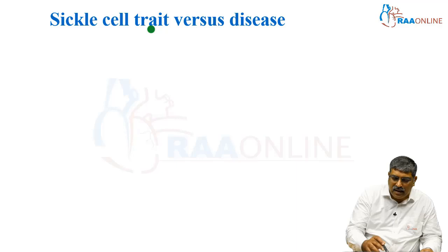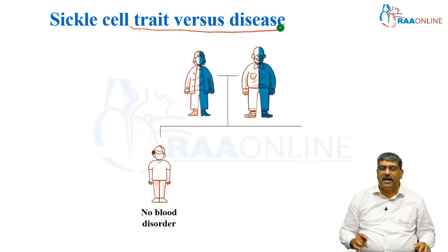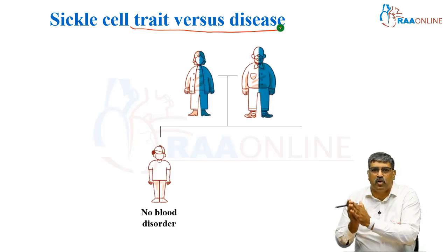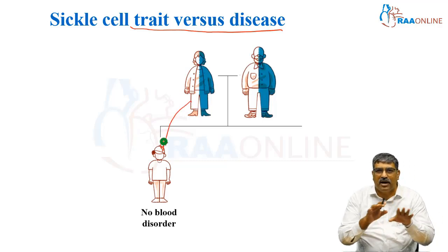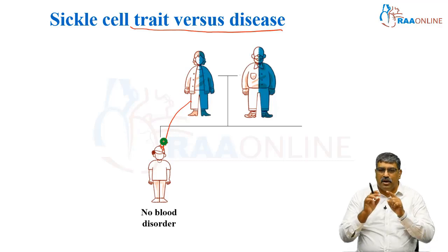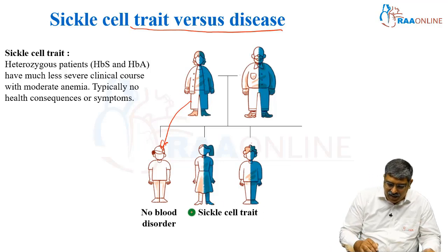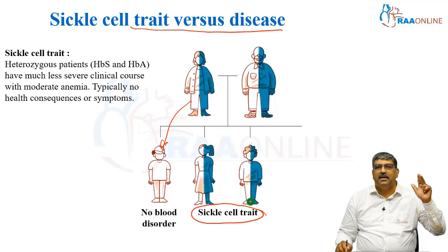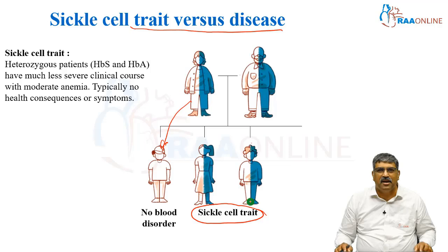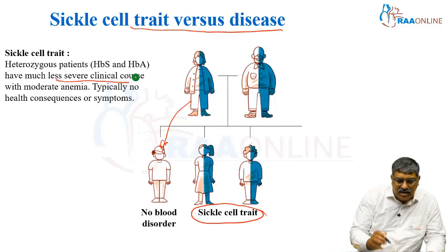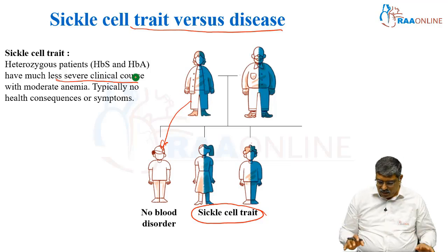Coming to the difference between trait and disease — what is sickle cell trait and what is disease? If you have a parent who is a carrier of hemoglobin S, when you receive normal hemoglobin from both parents, you don't have any blood disorder. But if you receive hemoglobin S from one parent, you become a sickle cell trait. Here there is hemoglobin S and hemoglobin A, the patient is heterozygous, and will have a less severe clinical course with moderate anemia. There are usually no other consequences or symptoms.